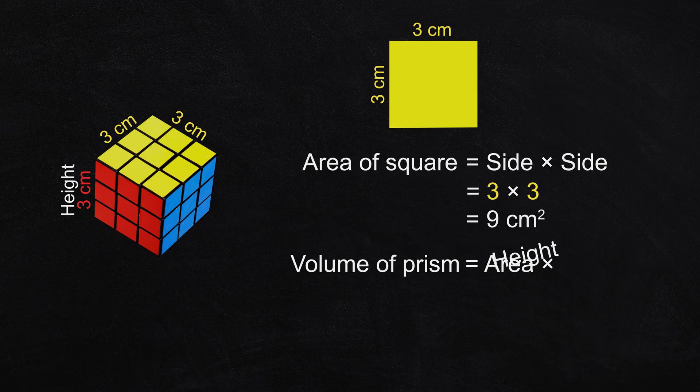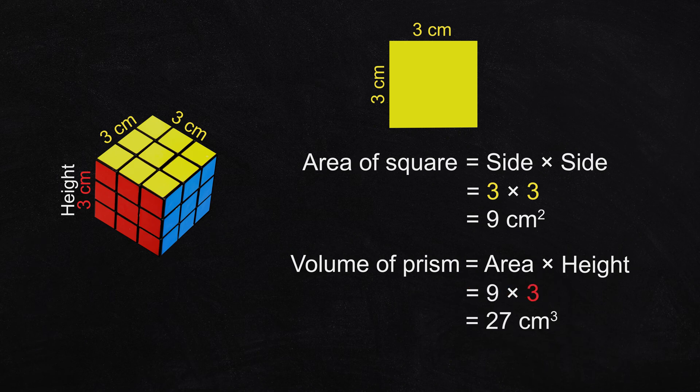Then we multiply the area of this square by the other dimension that we call the height. The volume of this square-based prism equals the area multiplied by the height. That's 9 multiplied by 3, which is 27. The volume of this square-based prism or cube is 27 cubic centimeters.